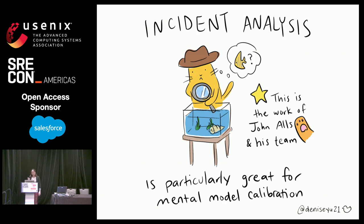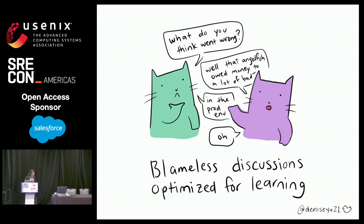How exactly does incident analysis connect to teasing out mental models? The real thing you need is to create an environment where you can have a blameless discussion that's optimized for learning — not for justice, not for blame, just learning. For example: what do you think went wrong? Oh, that's really interesting, I really thought it was this other thing. These are recalibration opportunities.